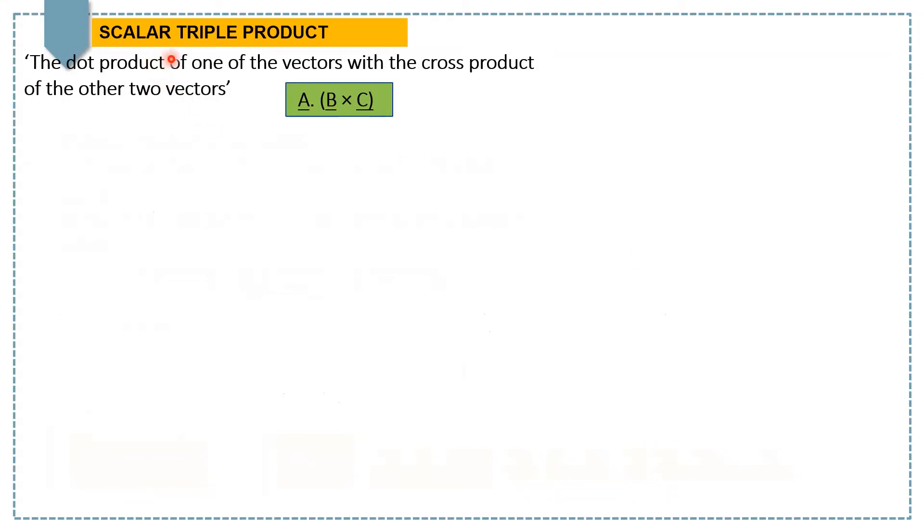In this lecture, we are going to discuss scalar triple product. For a given set of three vectors A, B, and C, the dot product of one of the vectors with the cross product of the other two vectors gives us a scalar triple product.